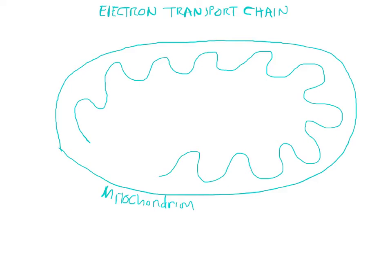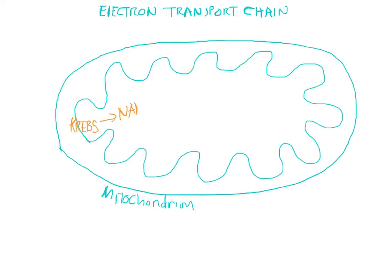So the more of that inner membrane surface area you have, the better. We left off with the Krebs cycle, which also happens in the mitochondrion. The main energy-carrying molecule coming out of the Krebs is NADH.